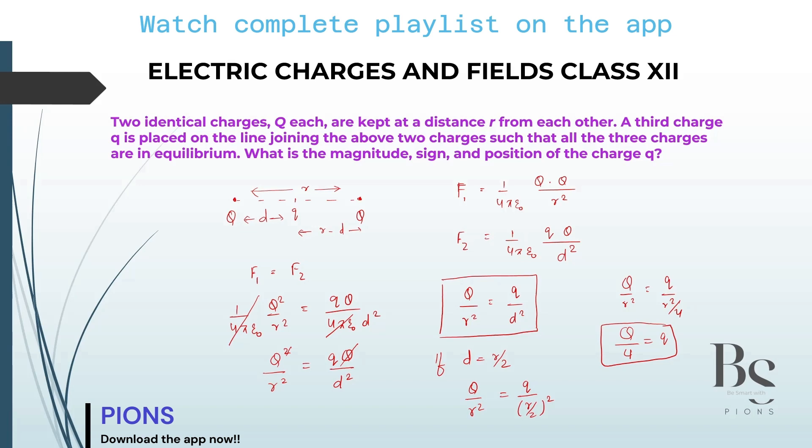Also, the sign should be minus Q by 4. The whole system will be in equilibrium only if this small q is negative.